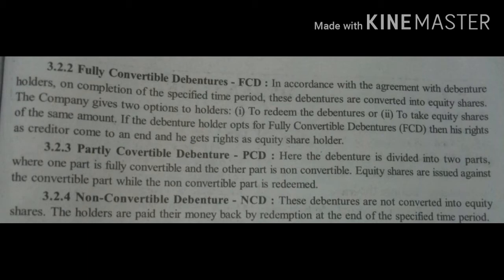Partially convertible debenture: here the debentures can be converted into equity shares only partly, and the unconvertible portion remains as such. Equity shares are issued against the convertible part, while the non-convertible part is redeemed. Third is non-convertible debenture: these debentures are not converted into equity shares. The holders are paid their money back by redemption at the end of the specified time period.